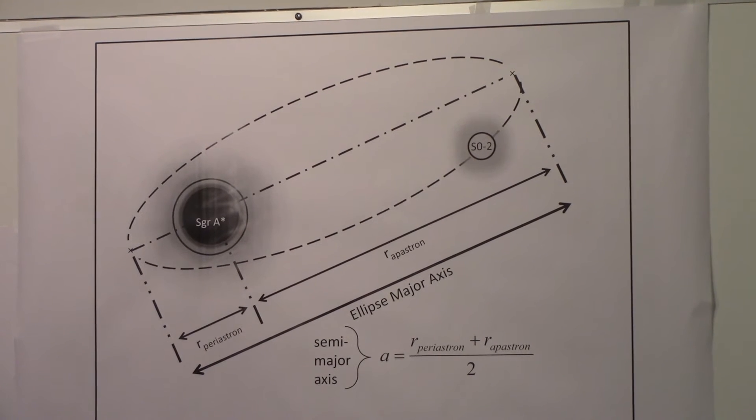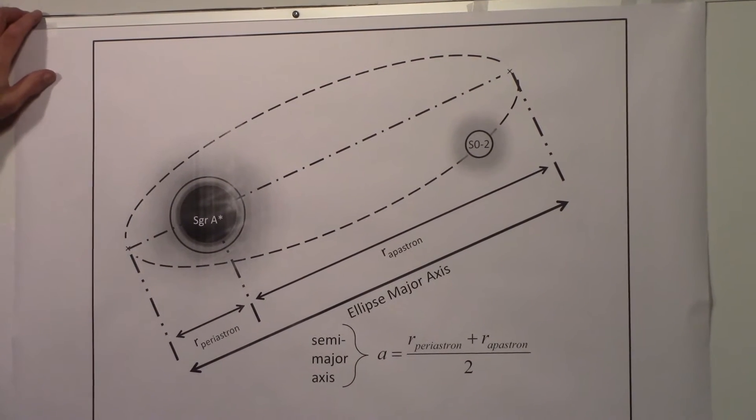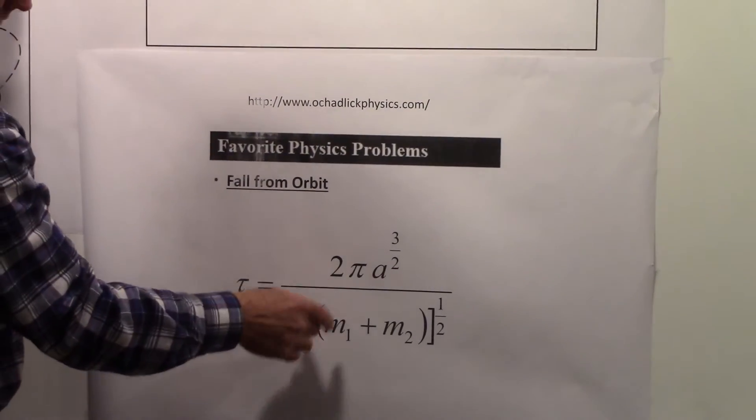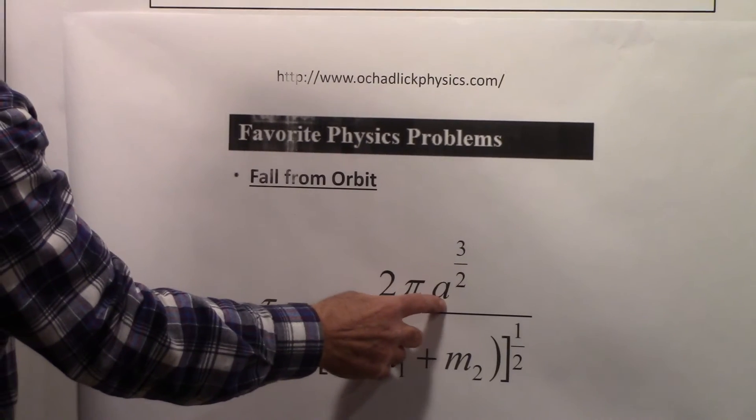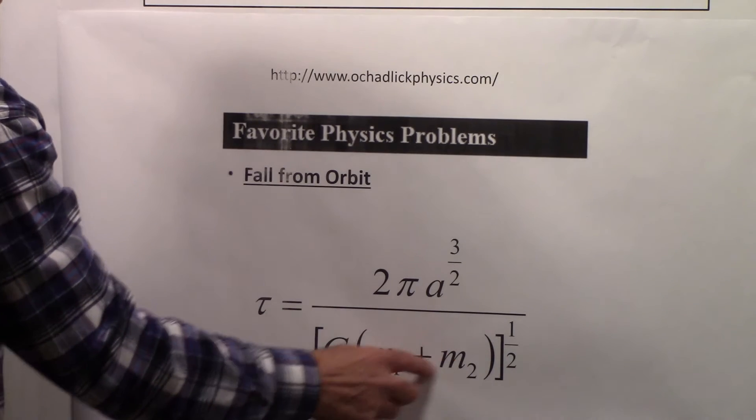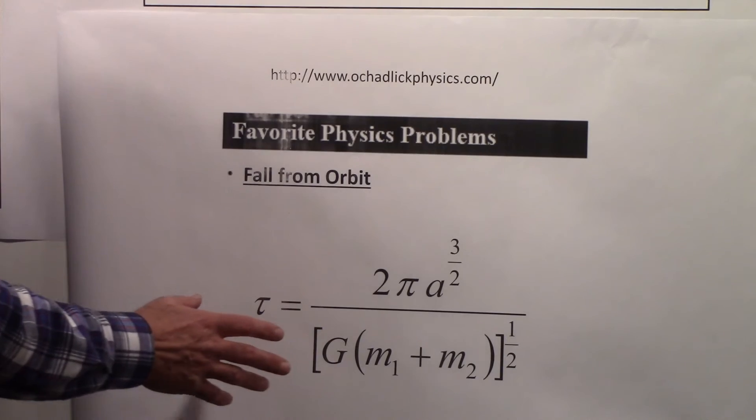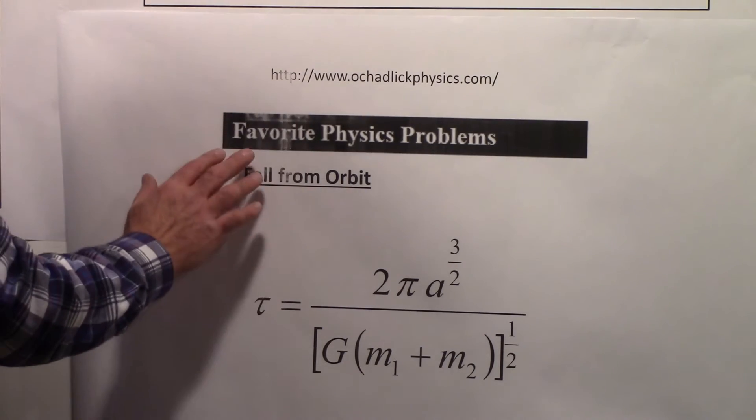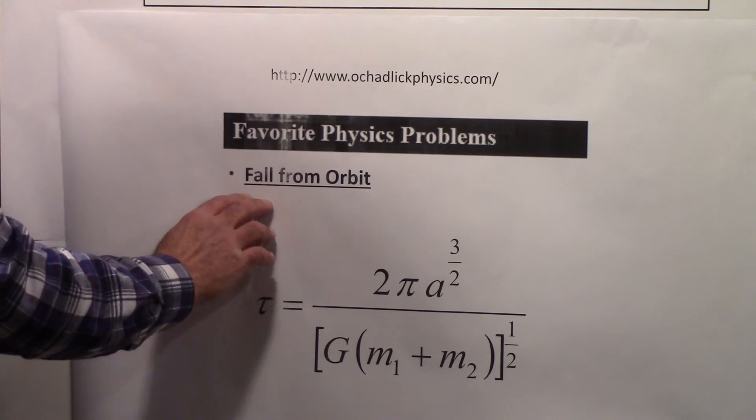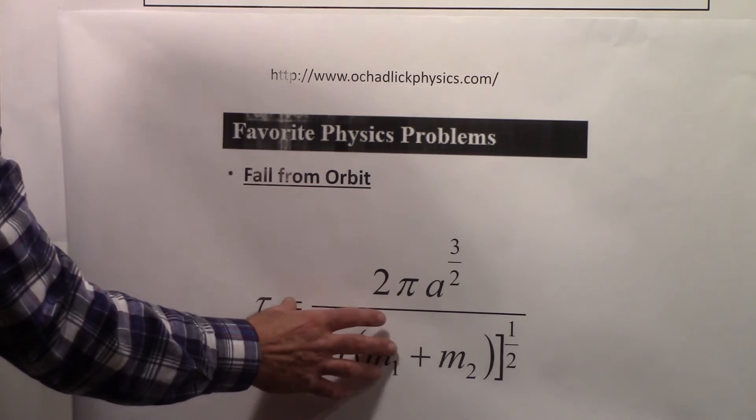We're going to need an equation relating the period to the semi-major axis. Instead of deriving it, I'm going to state it: the period is equal to 2π times the semi-major axis to the three-halves power, over the square root of G times the sum of the two masses. If you're interested in a derivation, you can go to this website. There's a section called Favorite Physics Problems, and there's a subject listed called Fall from Orbit where you'll find the derivation.